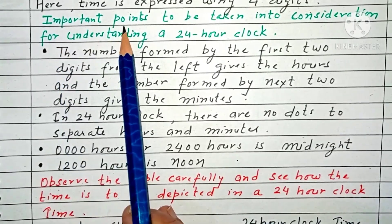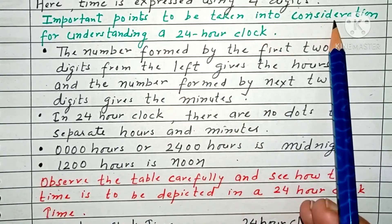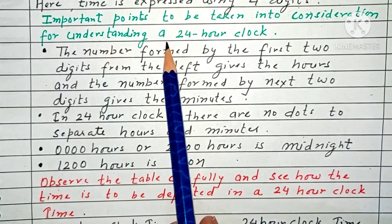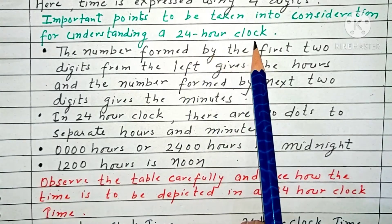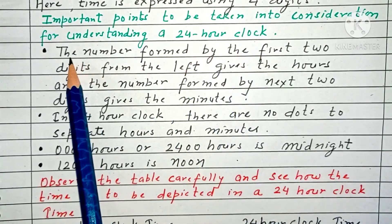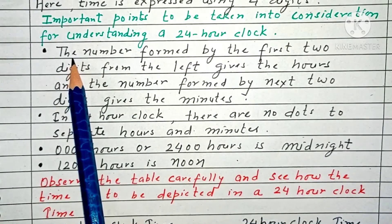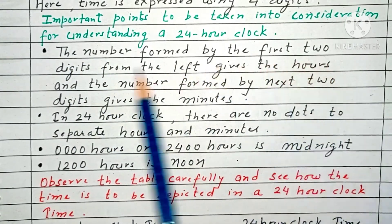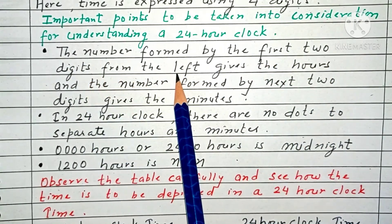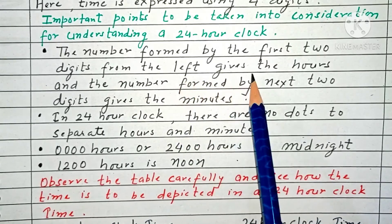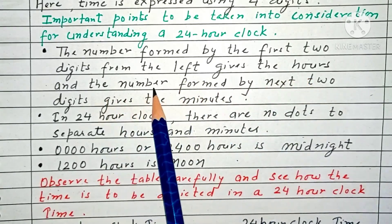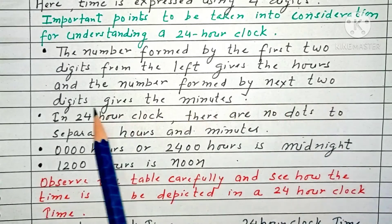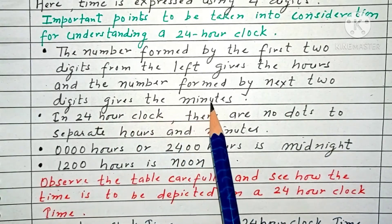Here are important points to be taken into consideration for understanding a 24-hour clock. Number 1: the number formed by the first two digits from the left gives the hours, and the number formed by the next two digits gives the minutes.